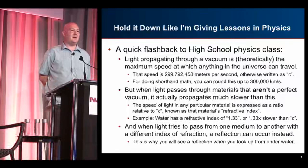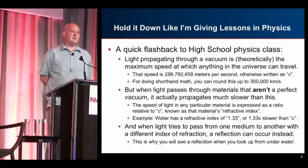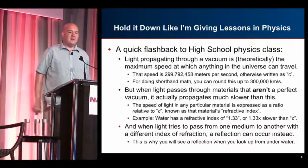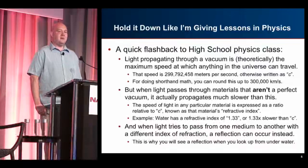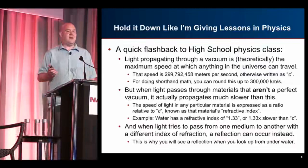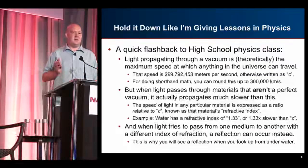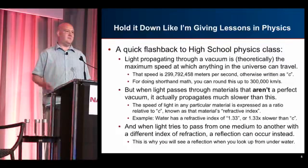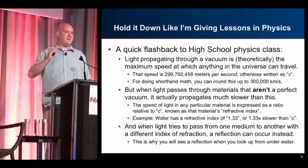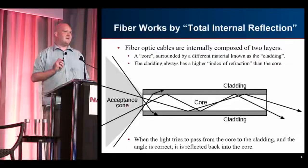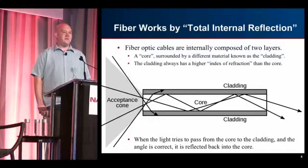When light tries to pass from one medium to another with a different index of refraction, you can get a reflection. If you've ever swum underwater and looked up and seen light being reflected back down, that's what's happening. All those things come together to give you something called total internal reflection.